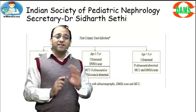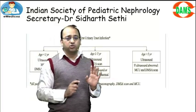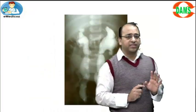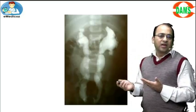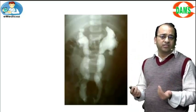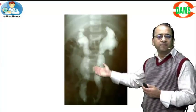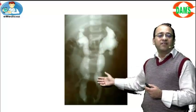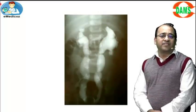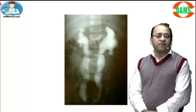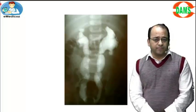On screen is a micturating cystourethrography showing grade 5 vesicoureteric reflux. Remember, vesicoureteric reflux is the most common cause of UTI in children — almost one third to half of UTIs in children are caused by VUR.